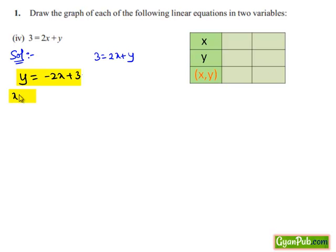Now, let us put x equals 0 in the above equation. Then we get y equals minus 2 times 0 plus 3, that equals 3. So when x equals 0, y equals 3. Hence, the ordered pair (0, 3) is one solution of the given equation.